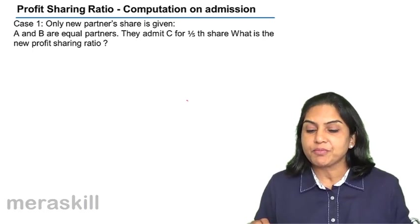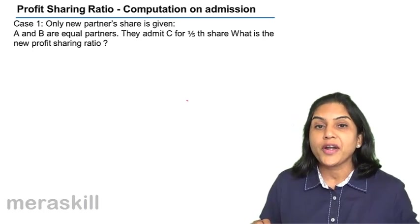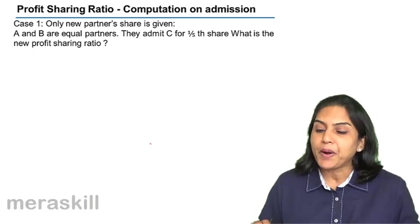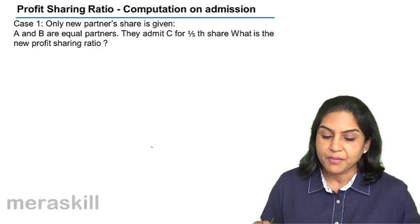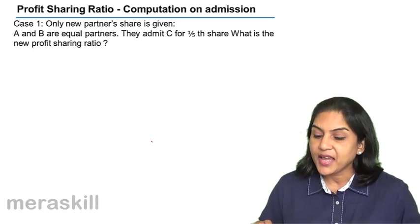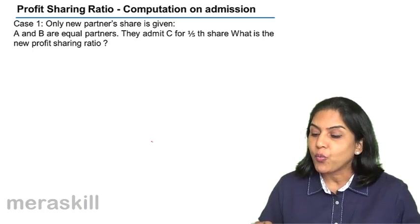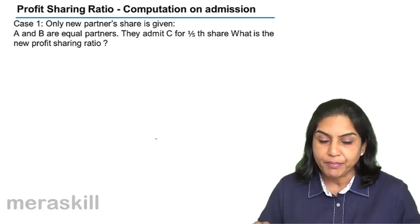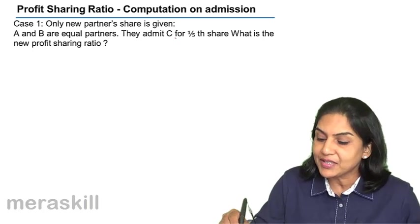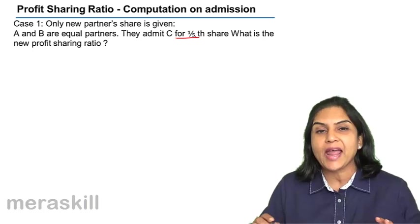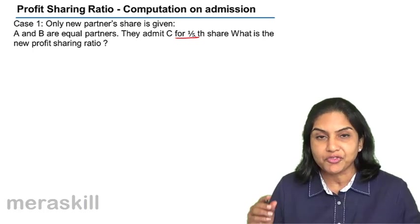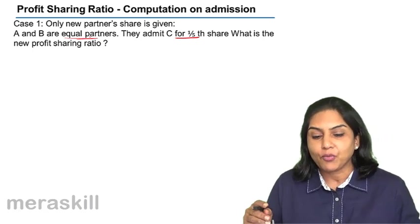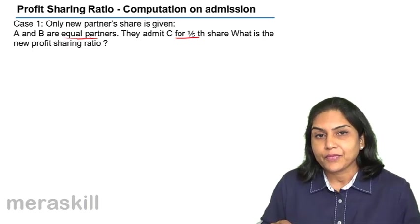Next, let us consider the change in profit sharing ratio on admission of a partner. Only the new partner's share is given. For example, A and B are equal partners and they admit C for one-fifth share. If nothing is mentioned about the old partners, it is assumed that A and B will continue with whatever was their existing ratio.